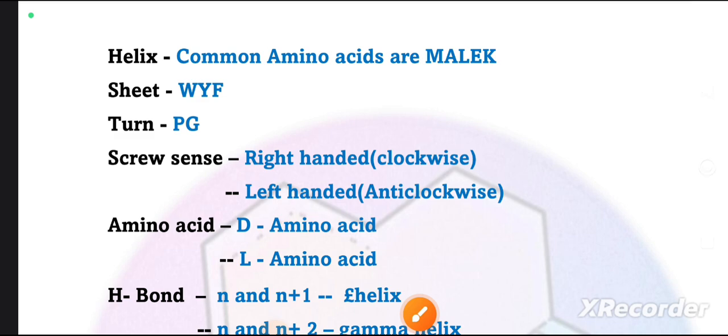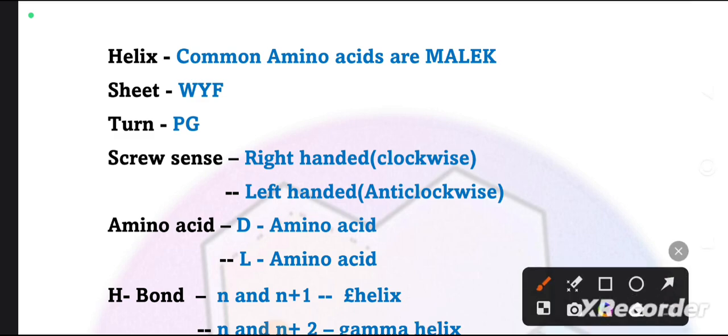If we look at these amino acids, we have written the single letter code of amino acids: M for methionine, A for alanine, L for leucine, E for glutamic acid, and K for lysine.